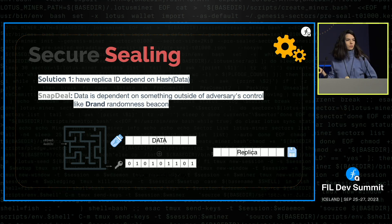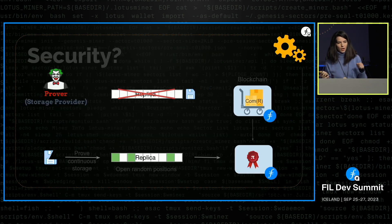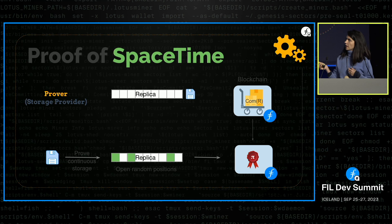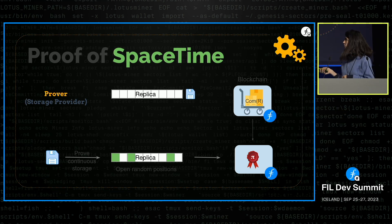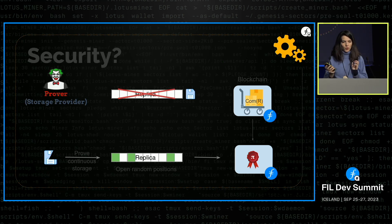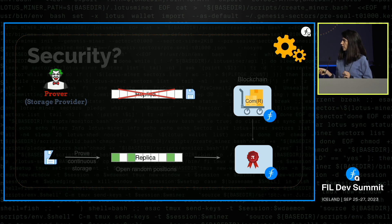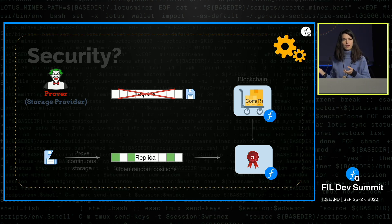In the execution phase, we challenge the storage provider to show it still has positions in the replica stored on disk. We ask random positions using the random beacon and the storage provider publishes a small proof that they still have those positions — it's small because we only check a few positions. For security, we want to ensure an adversary who deletes the replica cannot answer correctly — having only a fraction of the replica should not allow success in the challenge phase where they must prove they still have the entire replica.